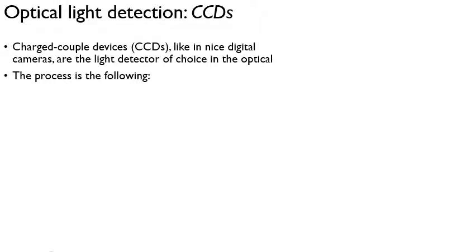How do we detect the light for an optical telescope? That is done with a CCD, or charged couple devices. It's like the same technology that's in a nice digital camera. It's not the same that's in your cell phone in all likelihood—those are called CMOS detectors and they're different. The CCDs are more expensive and higher performance.